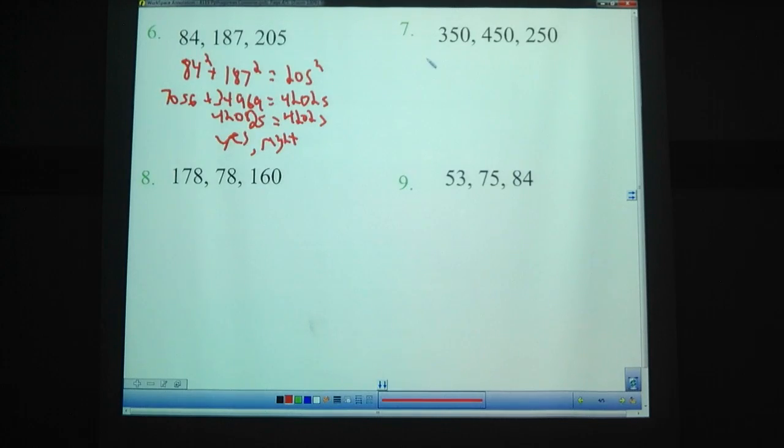Number 7. We'd want to do 250 squared plus 350 squared equals 450 squared. So 250 squared, that is 62,500. 350 squared, that's 122,500. 450 squared is 202,500. If you add these two together, 185,000, which is not the same. So this one is not a right triangle.